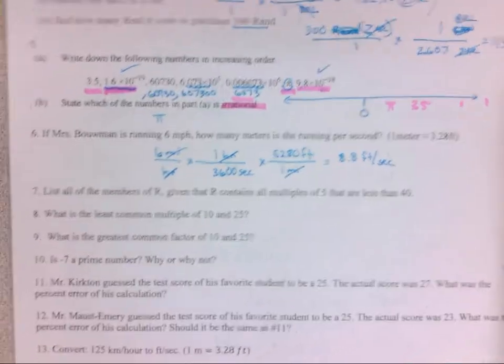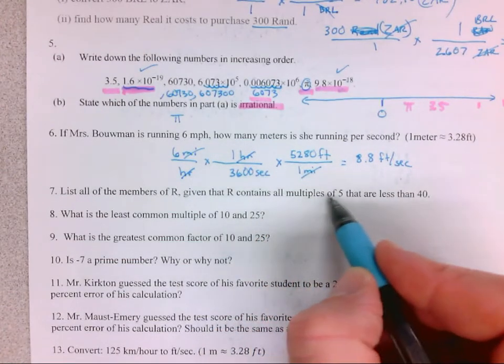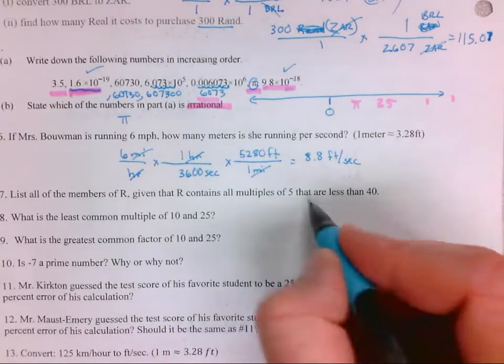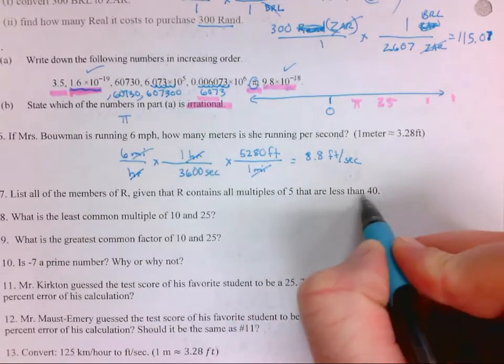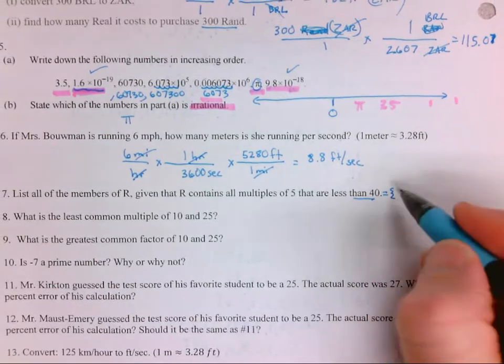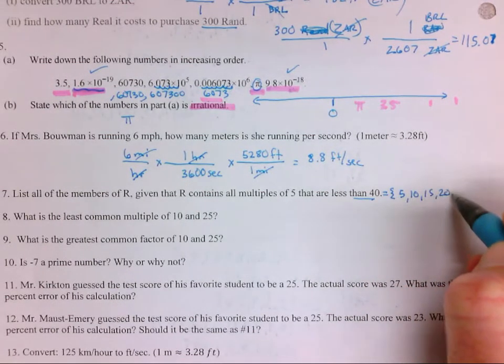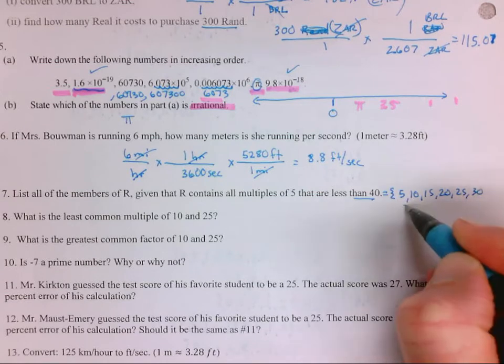List all the members of R, given that R contains all multiples of 5 that are less than 40. Less than 40 means not including 40. So our first one would be 5, 10, 15, 20, 25, 30, 35, and we stop. This didn't say less than or equal to.